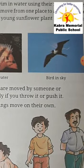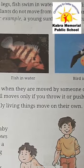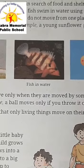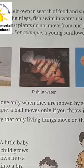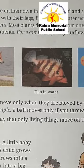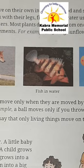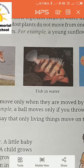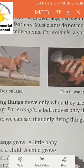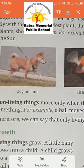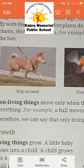Animals like dogs and cats walk with their legs. Fish swim in water using their fins — they cannot survive outside water. Birds fly using their feathers. Look at this — you can see a bird flying and the feathers clearly visible.